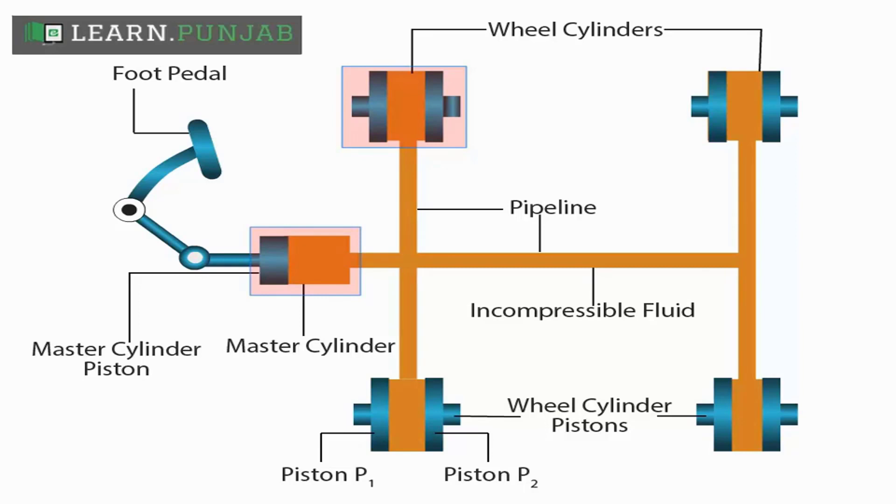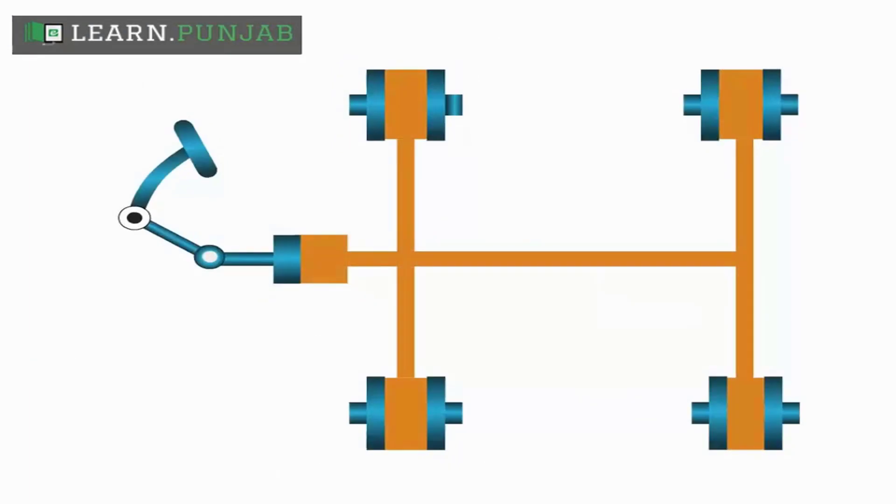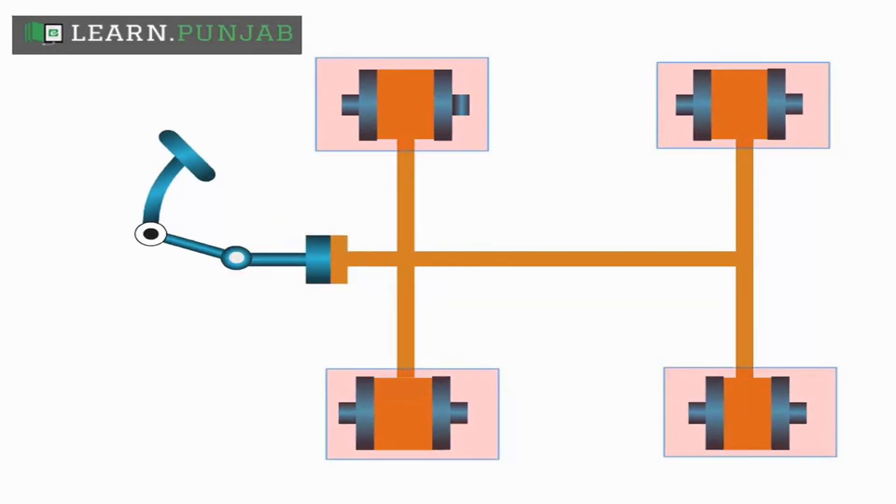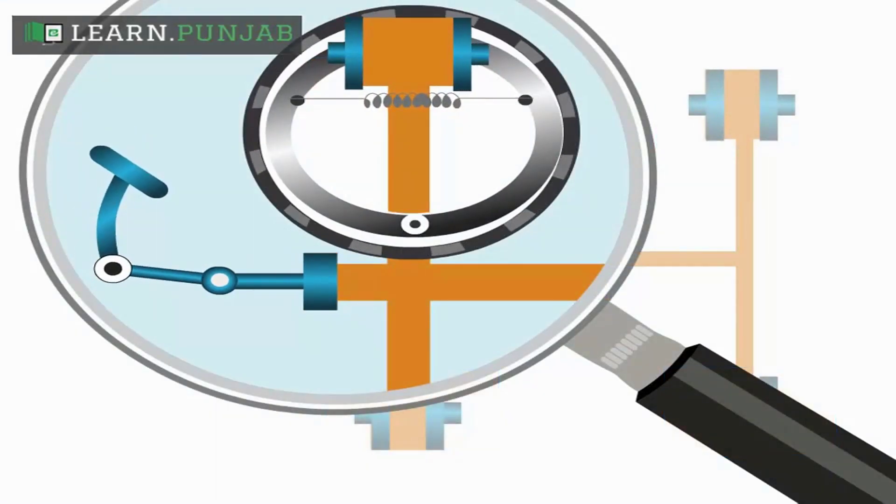Now we see what happens when the brake is applied. When the brake is applied, the foot pedal is compressed. Pressure is exerted on the fluid of the master cylinder, and this pressure without any loss is shifted to the pistons of the wheel cylinders. The pistons move outward and are compressed against the wheel wall. Because of this, movement of the wheel is ceased.